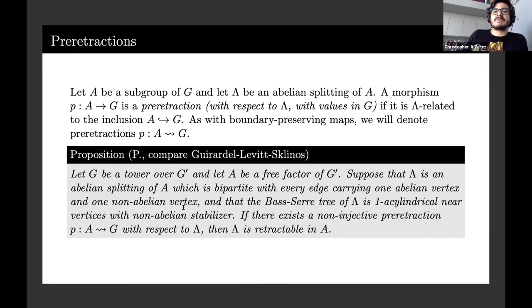The reason why we want to find a pre-retraction is because this allows us to find a retractable splitting which then allows us to find a floor and then a tower. If you have an abelian splitting of a group A, meaning that all the edge groups are abelian, and every edge carries one abelian vertex and one non-abelian vertex, and the corresponding Bass-Serre tree of the splitting is cylindrical near the vertices, if there exists a non-injective pre-retraction with respect to lambda, then that splitting is actually retractable.